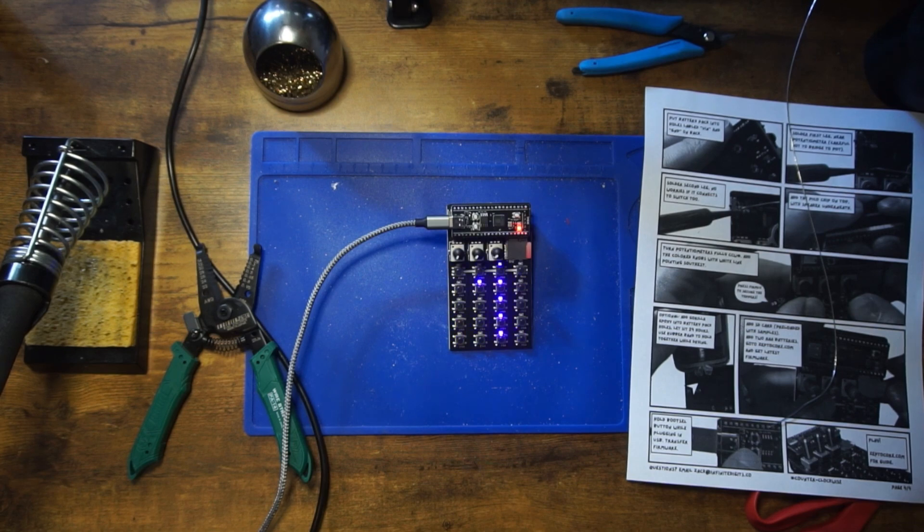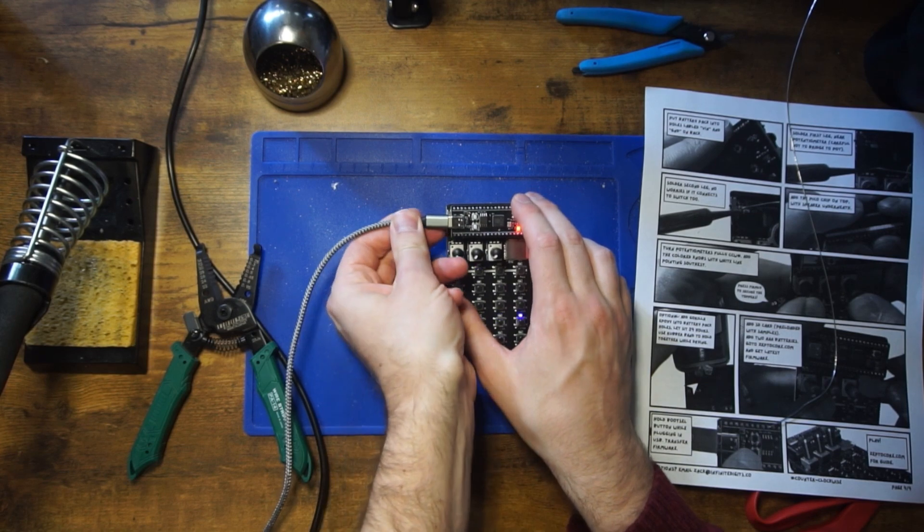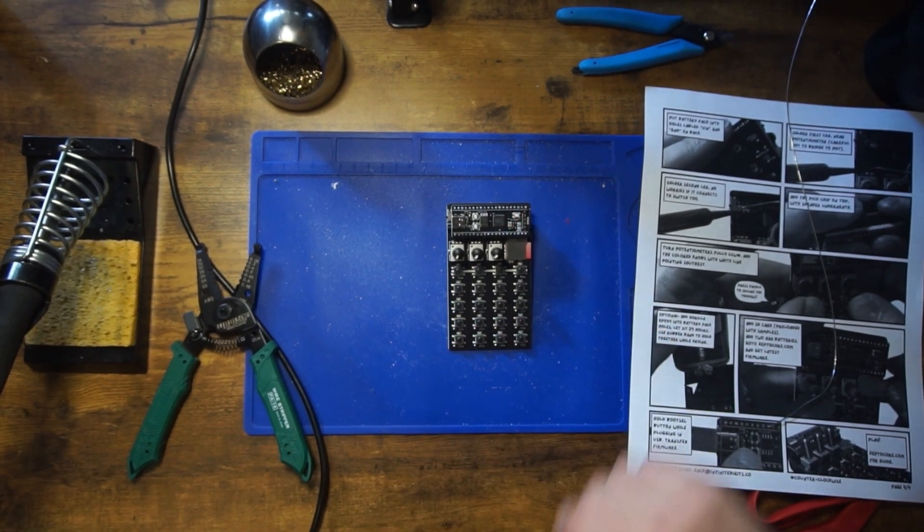Now you're good to go. You can unplug the USB-C cable, and now you can use the on switch on the top right to turn it on and off.